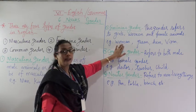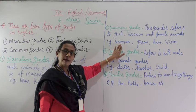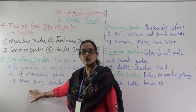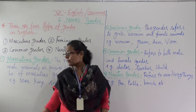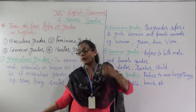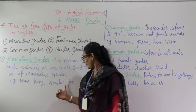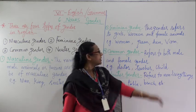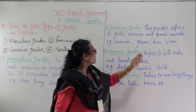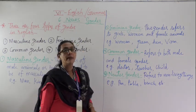For example: Man is masculine, and the feminine is Woman. King is Masculine Gender; the feminine gender is Queen. Masculine gender is Rooster; the feminine gender is Hen. Fox is Masculine Gender, and the feminine gender is Vixen. So this gender refers to girls, women, and female animals.